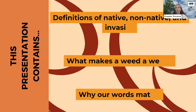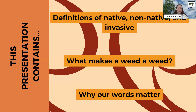We're going to talk about three main topics today. We're going to start out with defining the big three: native, non-native, and invasive. We're also going to talk about what makes a weed a weed, because that can be a really confusing topic, but it's important to know about. And then we're going to talk about why it even matters what words we use when we're talking about invasive species.